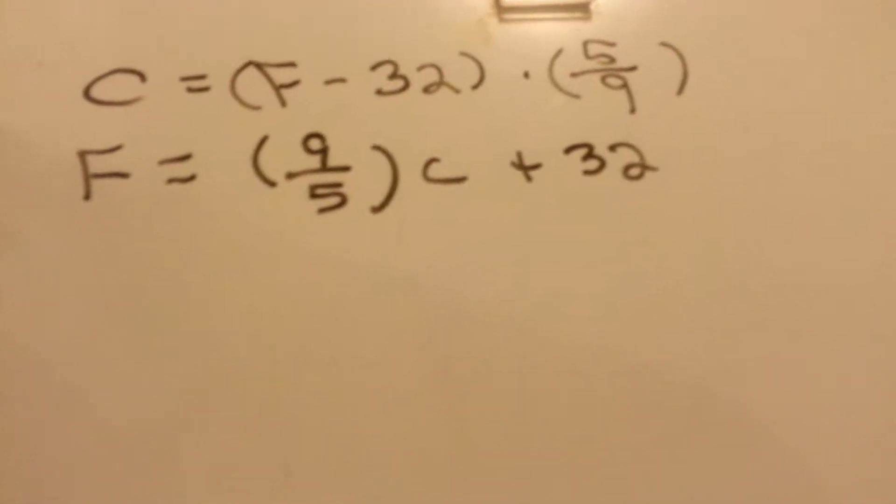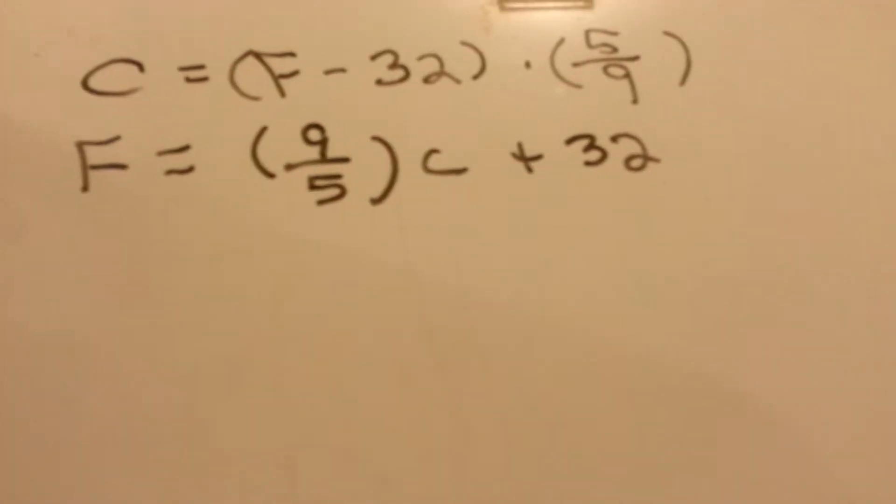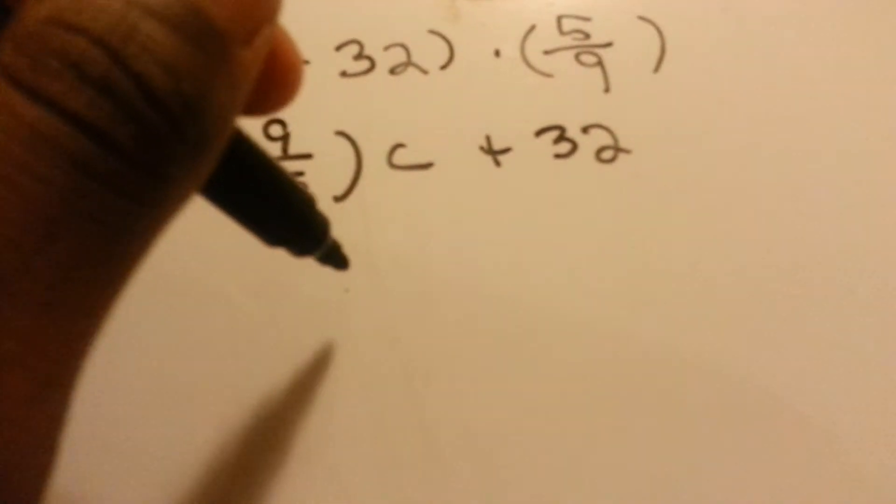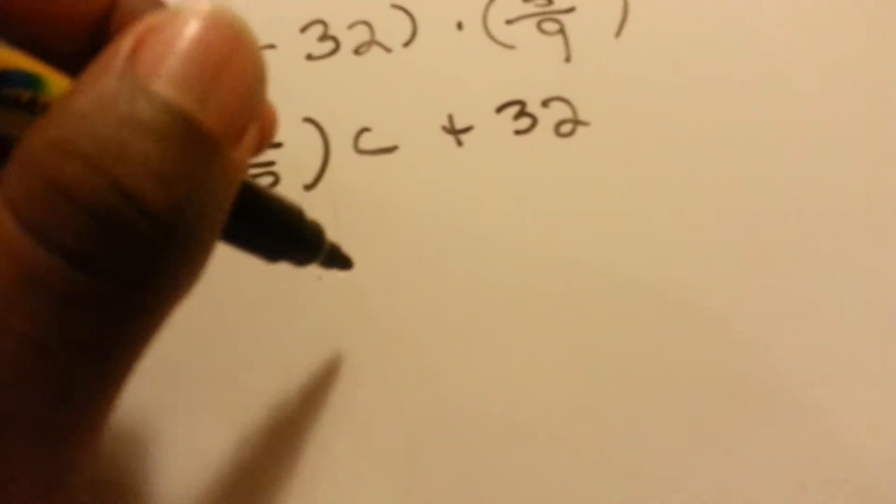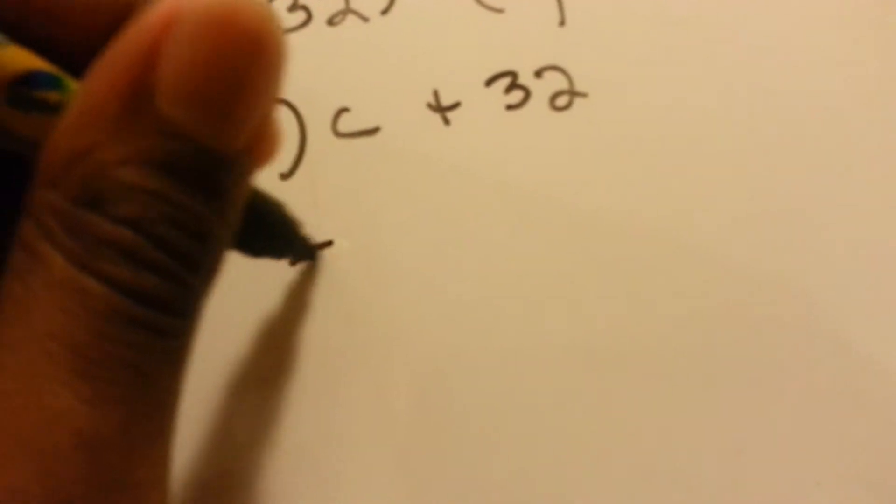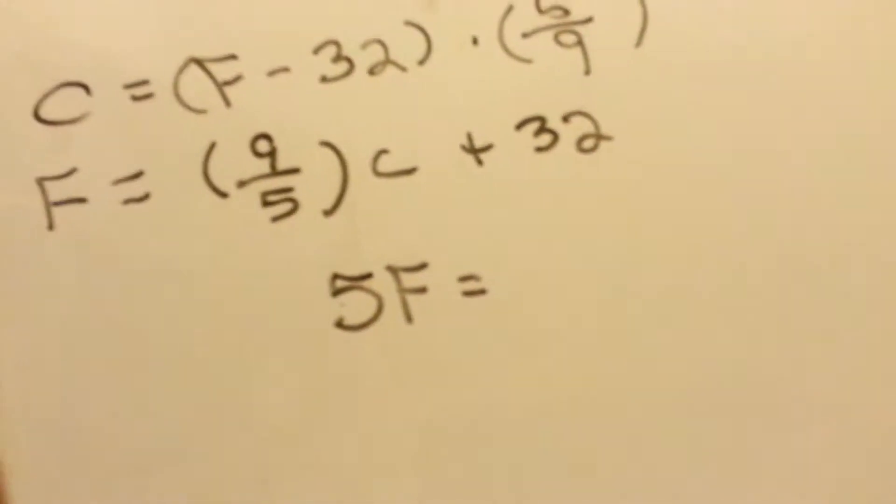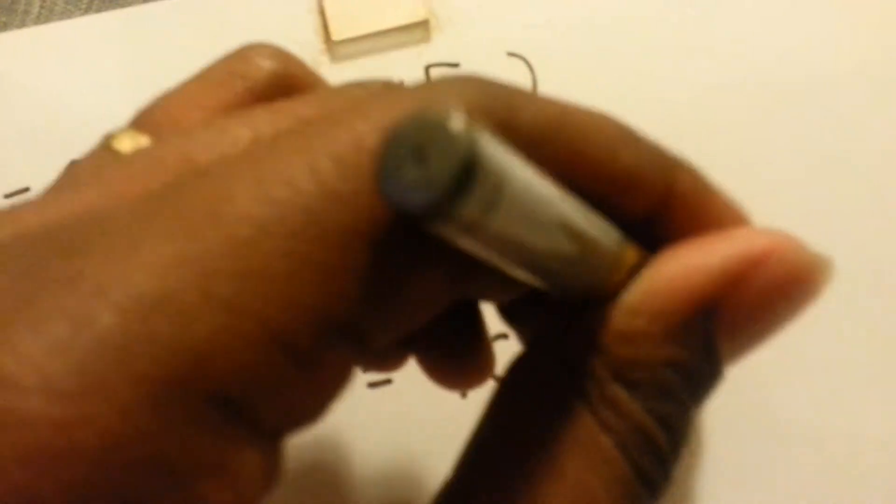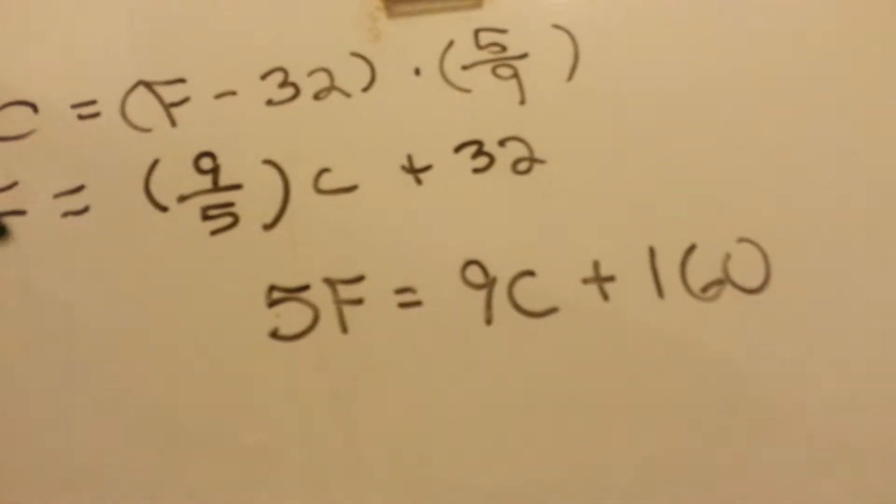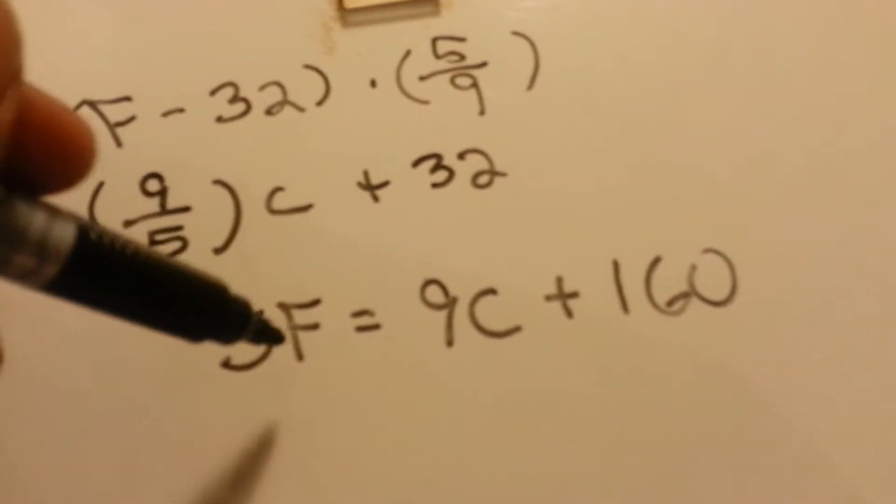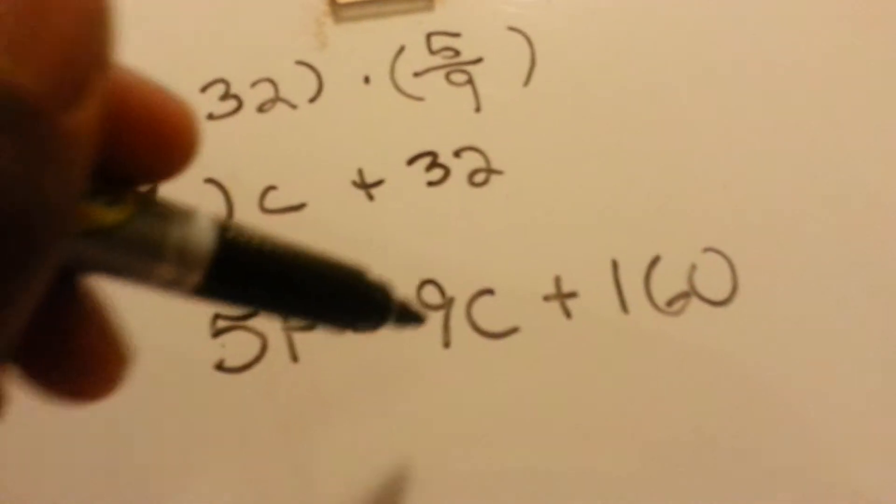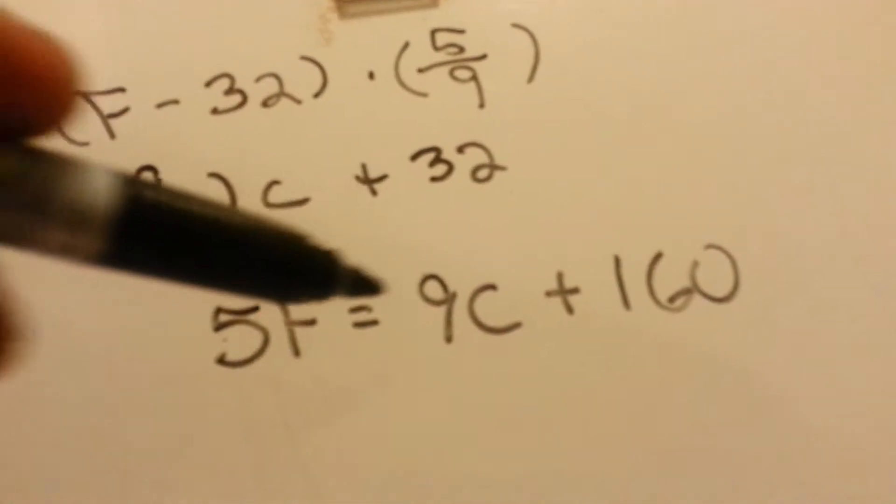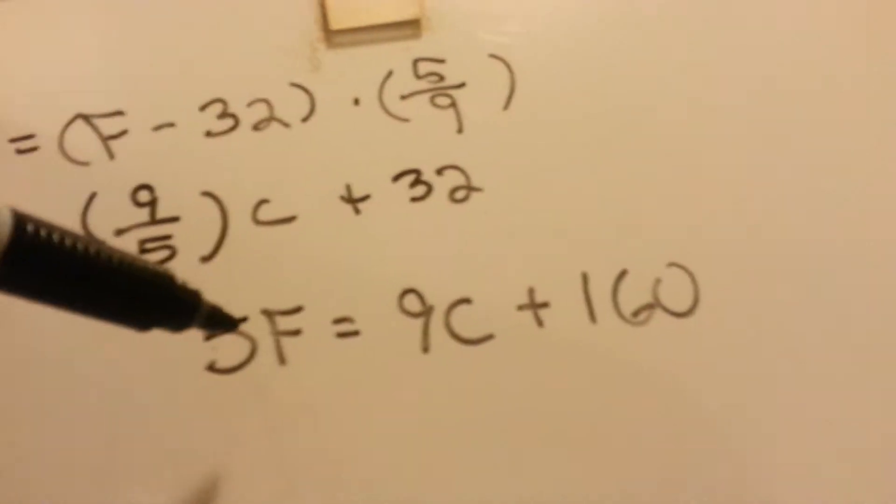But what I would recommend doing is kind of having a universal formula of 5F equals 9C plus 160. And that way, if you have it in degrees Fahrenheit, you can just plug it in for the F and then you solve for C and that would give you degrees Celsius. Or if you have degrees Celsius, you can just plug it in for the C and solve for F and that would give you degrees Fahrenheit.